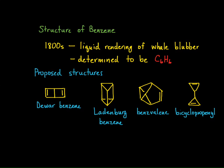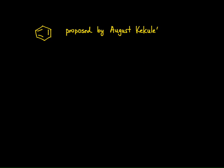A little bit later on, the structure we know today — what looks like 1,3,5-cyclohexatriene — came about. This structure was actually proposed by a man named Auguste Kekulé, and he named it 1,3,5-cyclohexatriene. Benzene was a common name derived from the whale blubber origin, and this is what he thought the structure looked like.